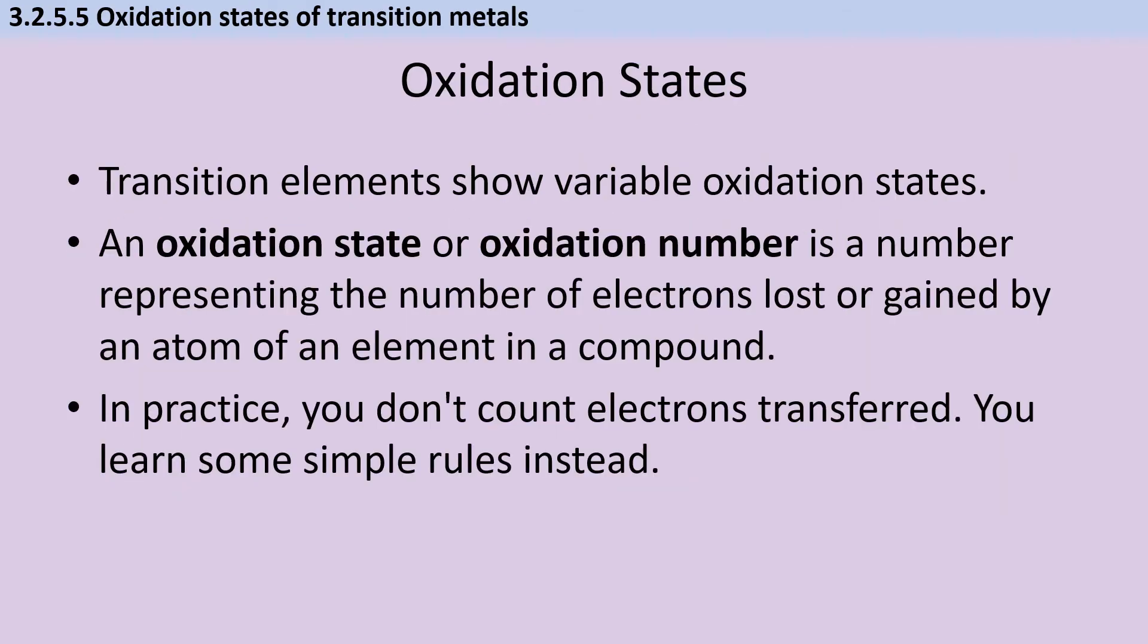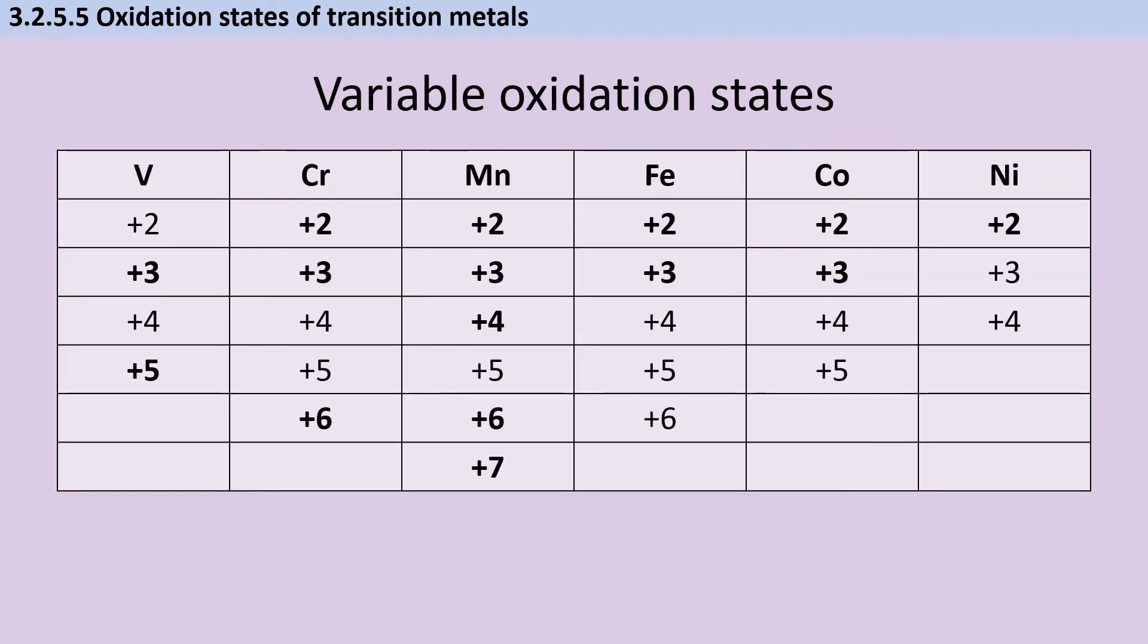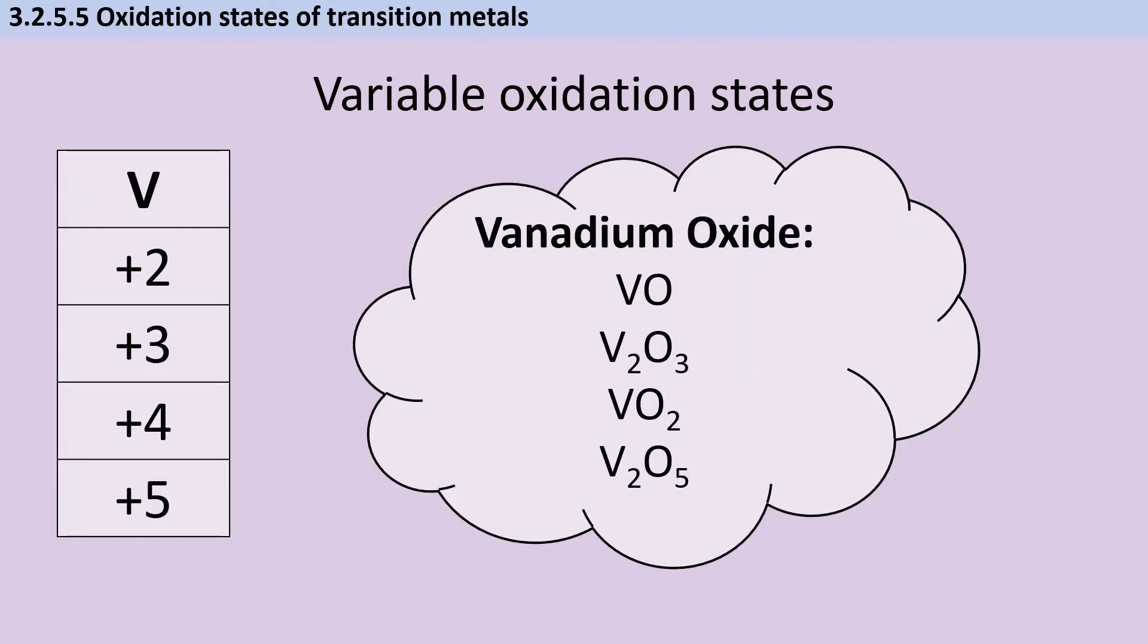Transition metals are well known for having multiple stable ions with different charges due to their multiple stable oxidation states. An oxidation state is a number representing the number of electrons lost or gained by an atom when it forms a compound. As you can see, all these transition metals have multiple stable oxidation states, with the ones in bold being the most stable. Vanadium is a classic example with four stable oxidation states which you should identify in neutral compounds and ions.